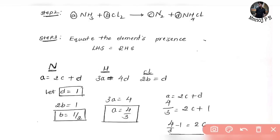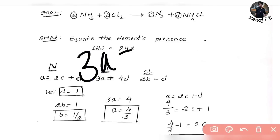Next, hydrogen element. Hydrogen is H — three times, three times of A. Which is equal to RHS: four times of D. So we can write the hydrogen equation: three A is equal to four D.